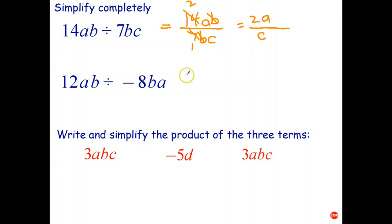Let's try this next one. You can stop the video if you wish and have a go yourself. Or just follow along. So again, the first step is to rewrite the divide as an algebraic fraction. And that's over negative 8ba. Again, I can divide both of those by 4. 4 goes into 8 twice. So that leaves a negative 2 on the bottom. 4 goes into 12 three times.